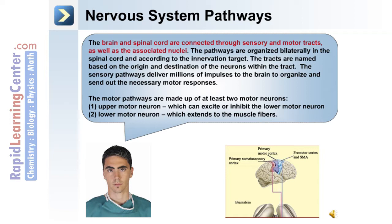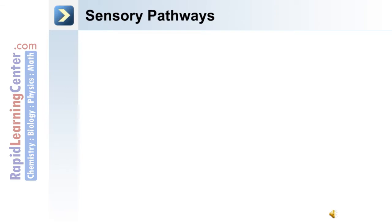The sensory pathways deliver millions of impulses to the brain to organize and send out the necessary motor responses. The motor pathways are made up of at least two motor neurons: the upper motor neuron and the lower motor neuron. The upper motor neuron can excite or inhibit the lower motor neuron, and the lower motor neuron extends to the muscle fibers or target.